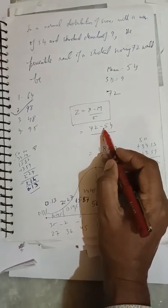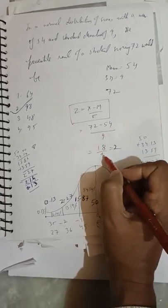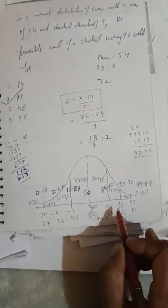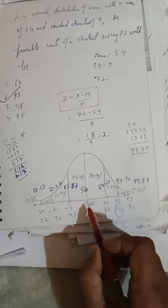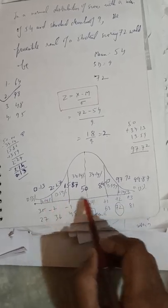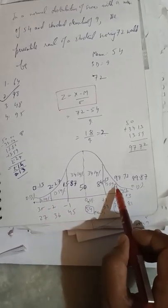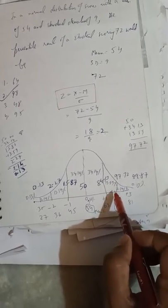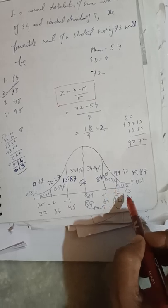So from 0 to +2 sigma. The question is about the percentile rank of a student scoring above 72.